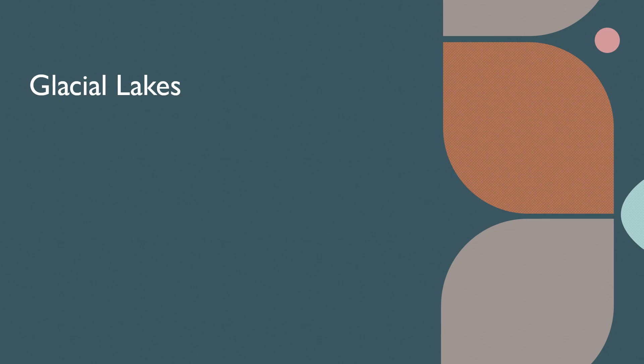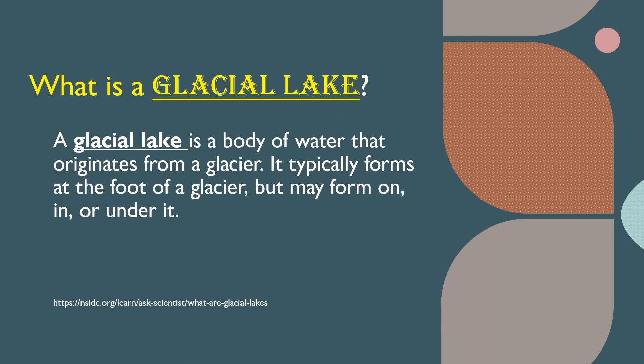The following information comes from the U.S. National Snow and Ice Data Center, which is a nice resource for understanding glaciers and their development. A glacial lake is one that originates from a glacier. As defined by the NSIDC, a glacial lake can form at the base of a glacier, but can also form on, in, or under glaciers.